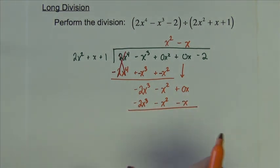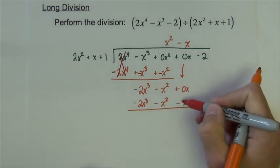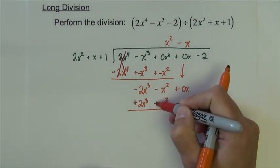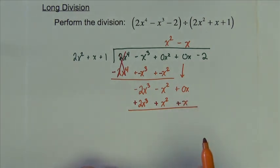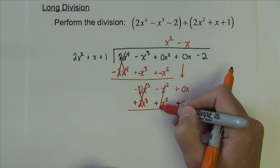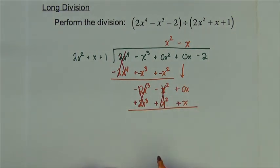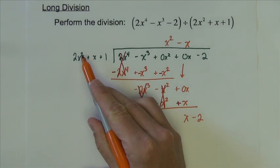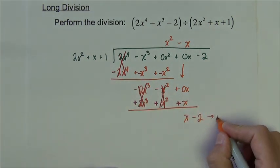And now remember we're going to subtract this row. And subtracting these negatives changes them to positives. So let's see. This cancels. And it just so happens that this also cancels. We are left with x minus 2. Since the degree of this part is now smaller than this, this here becomes the remainder.